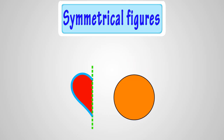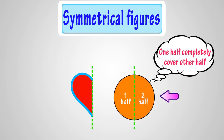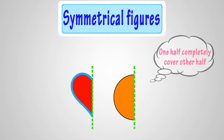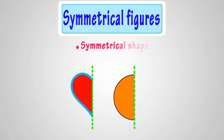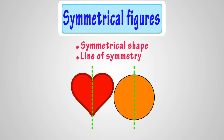When you can fold a shape in half, and one half exactly covers the other half, we can say that this shape is symmetrical. And the fold line is the line of symmetry. So, this shape is a symmetrical shape, and this line of fold that divides this shape into two similar halves is the line of symmetry.